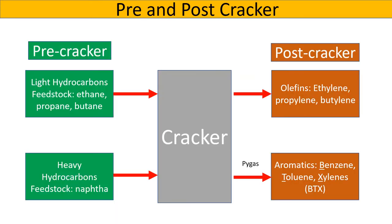The hydrocarbons before the cracker, which is a big furnace, are usually called feedstocks. Chemicals that are post-cracker are called basic or commodity chemicals. The term petrochemicals is used for the chemicals entering the cracker, like naphtha and ethane, and for basic chemicals exiting the cracker, like olefins and aromatics.